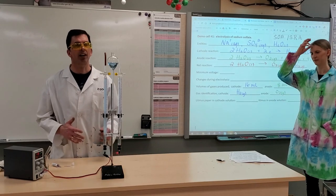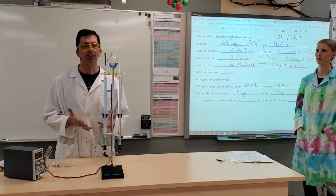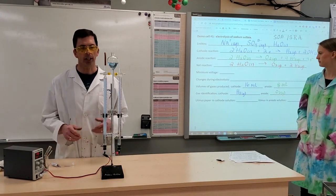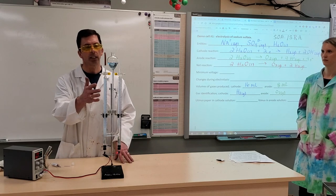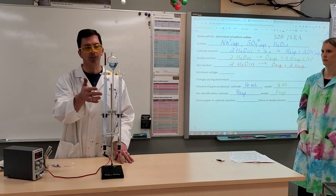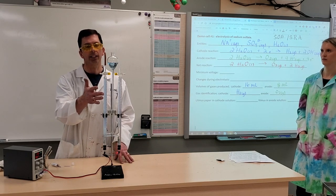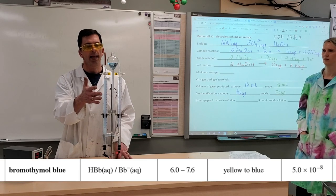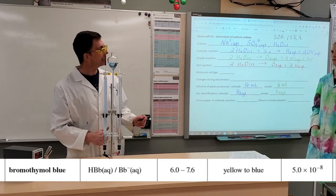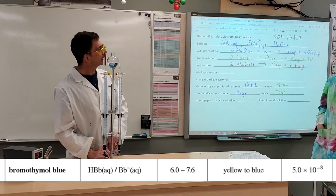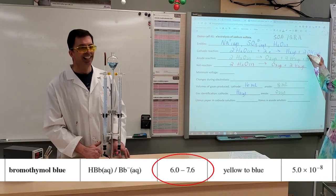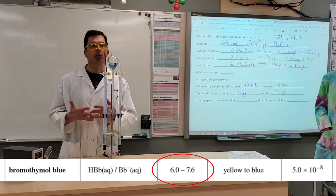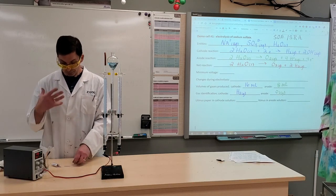Next, we'll verify the presence of acid and base at our electrodes. So here again at the cathode on your left, notice that the bromothymol blue indicator is turning blue. And so recall from your studies of acid-base indicators that the production of hydroxide ions turns bromothymol blue. Blue.